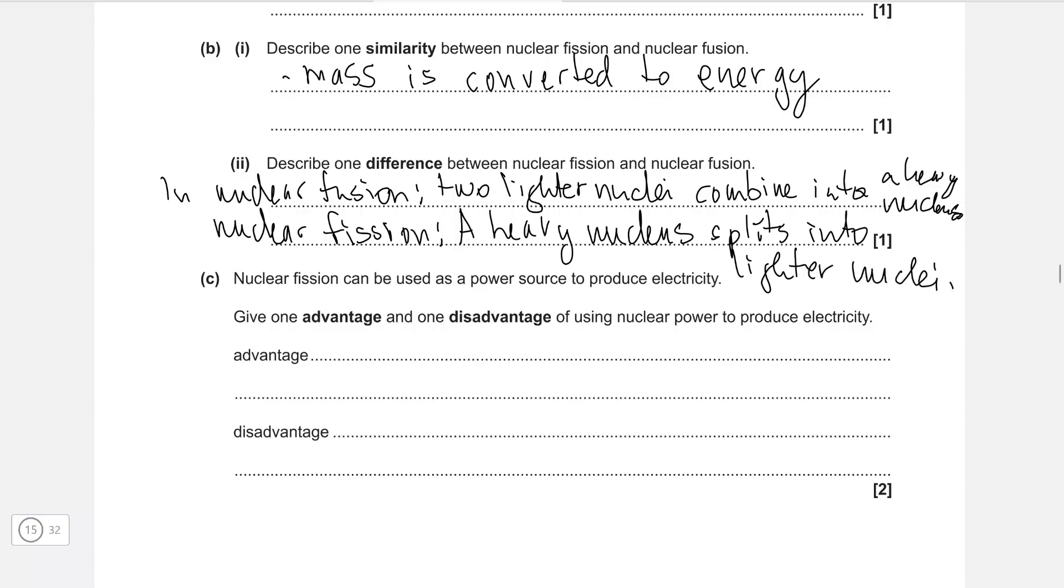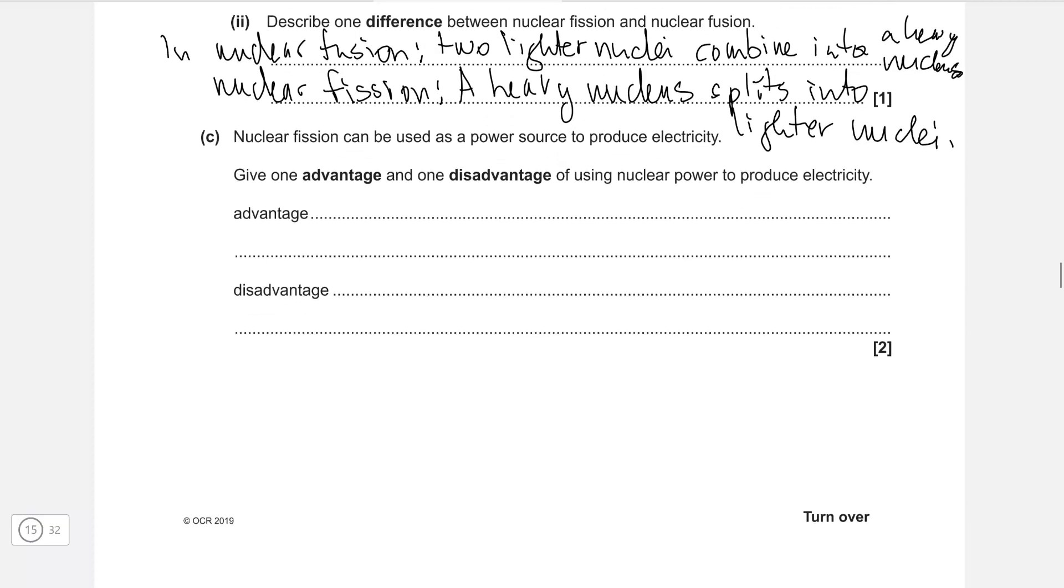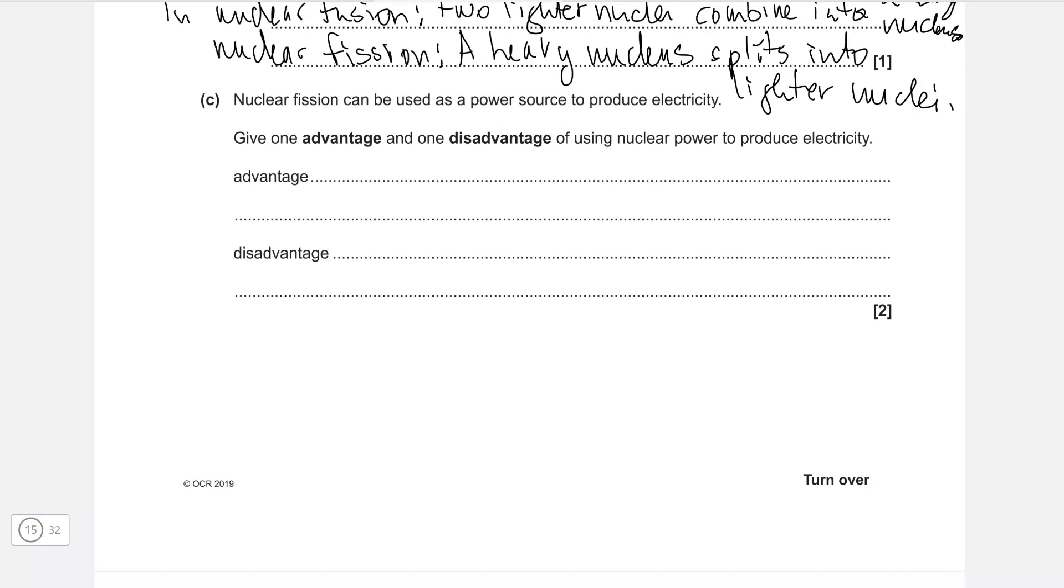Nuclear fission can be used as a power source to produce electricity. Give one advantage and one disadvantage of using nuclear power to produce electricity. Advantage: there's no carbon dioxide produced. And the disadvantage: we can simply write nuclear waste.